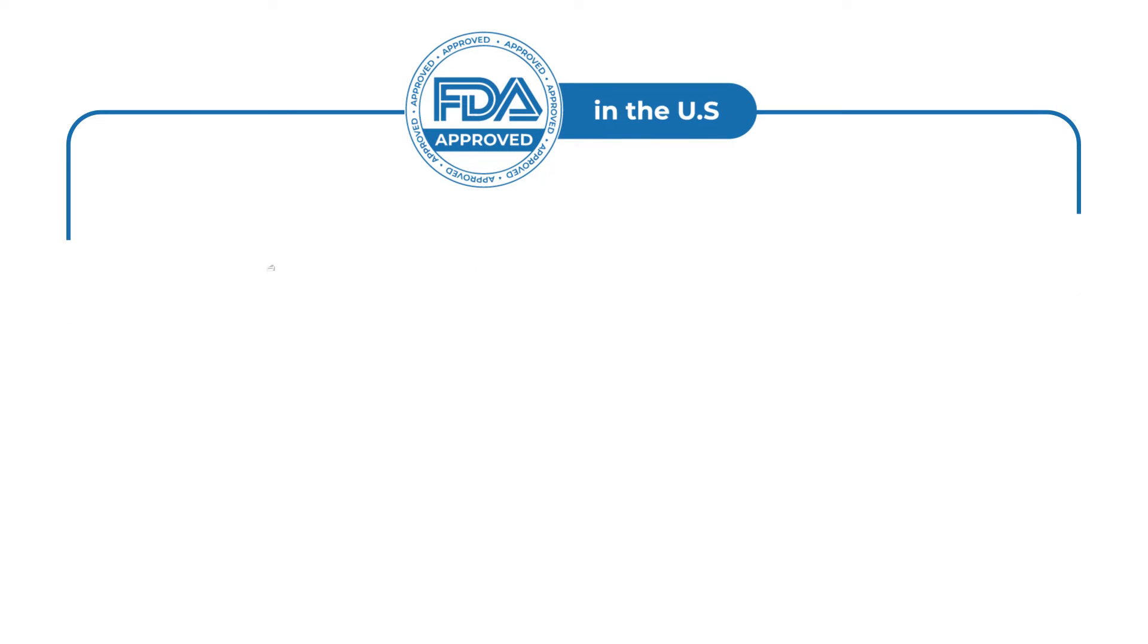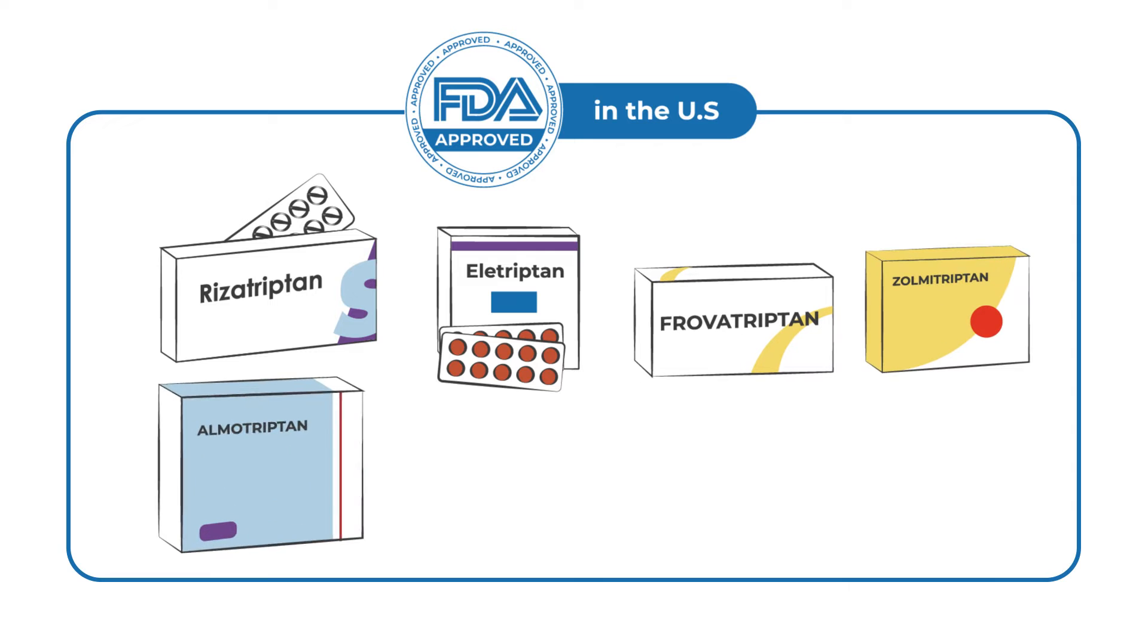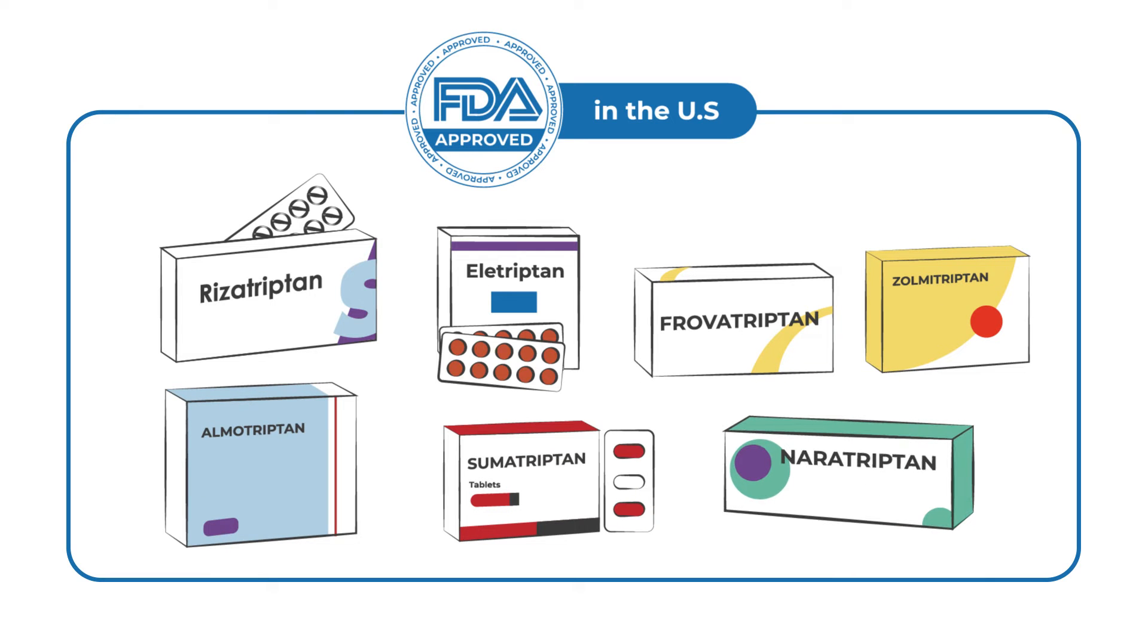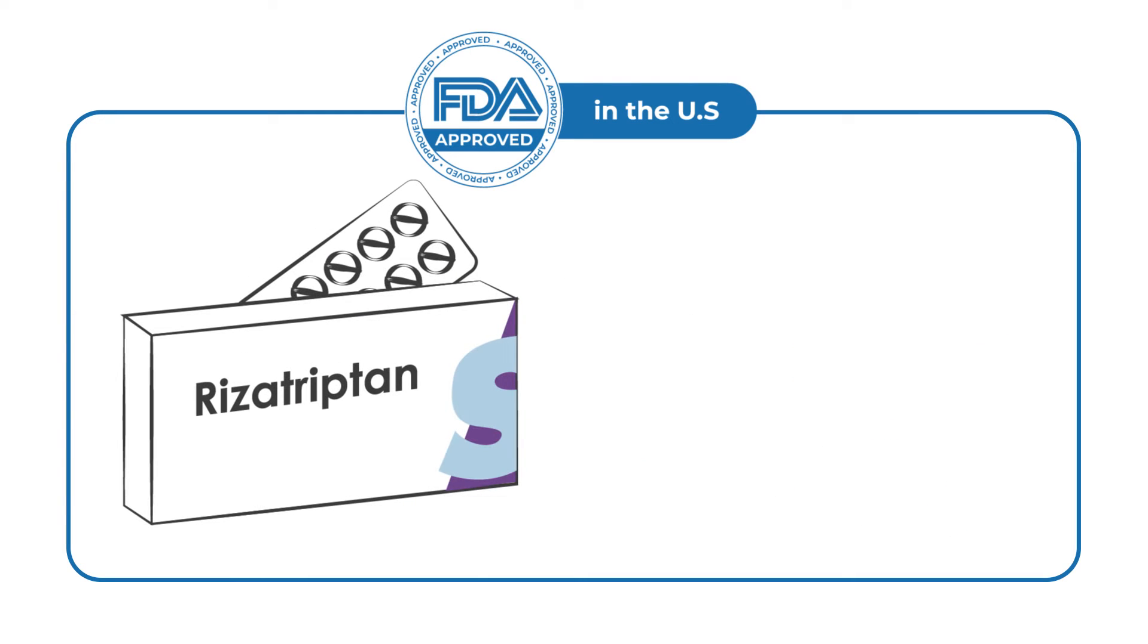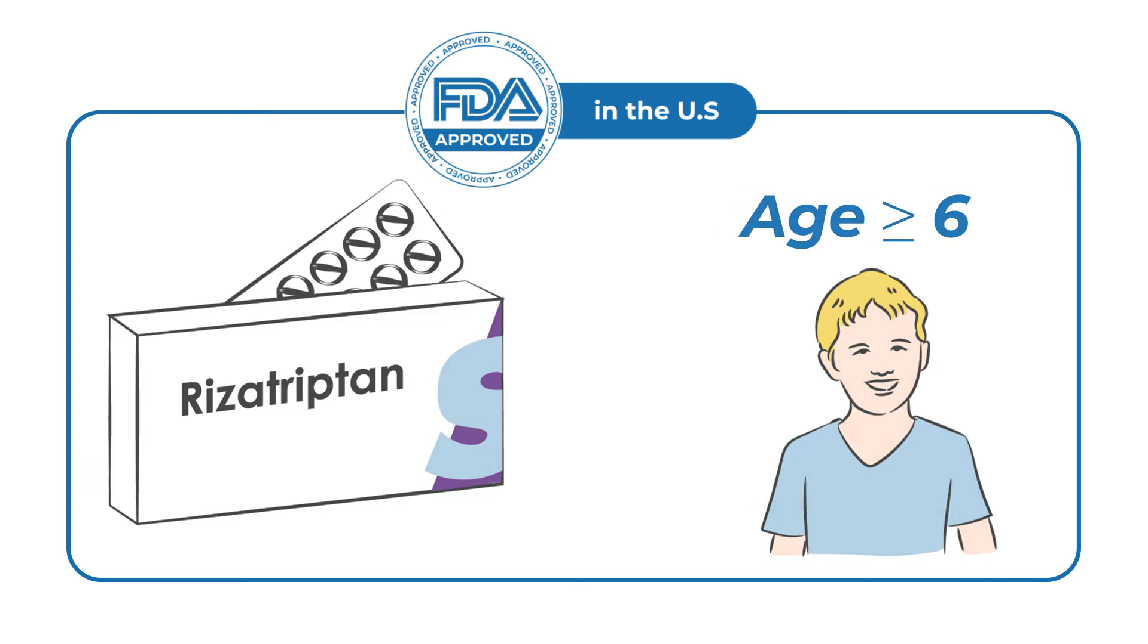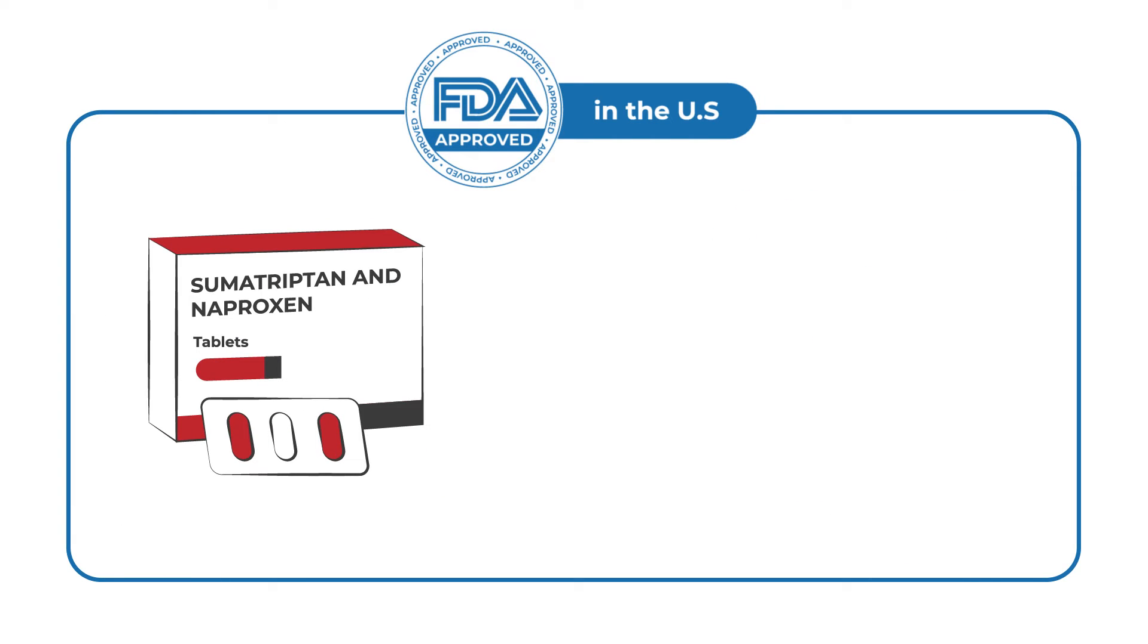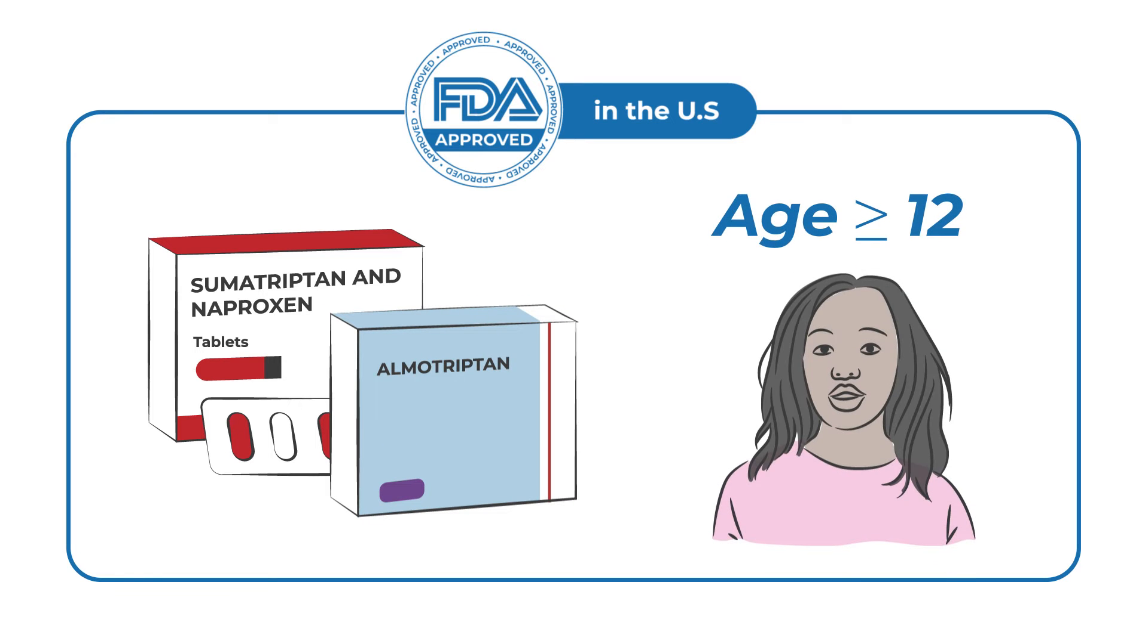There are seven Triptans FDA-approved for adults in the U.S., a few of which are also approved for use in children and adolescents. Rizatriptan is FDA-approved for children aged six years and older. Sumatriptan and naproxen combination as well as Almotriptan are FDA-approved for children aged 12 years and older.